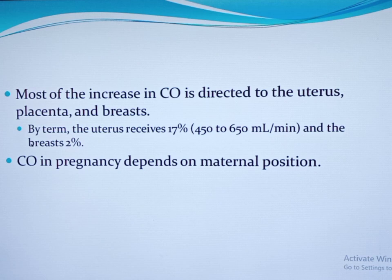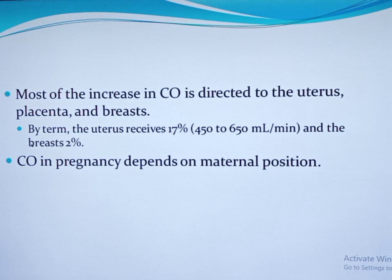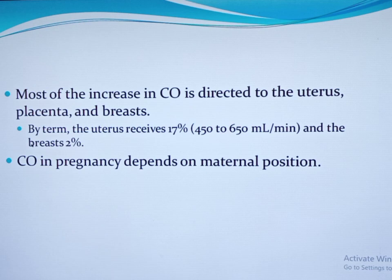In the first trimester and before pregnancy, the uterus receives two to three percent of overall cardiac output and the breast receives one percent. But at term, the uterus receives 17 percent of the cardiac output — that is 450 to 650 ml per minute — and the breast receives two percent. This increment of cardiac output during pregnancy is at the expense of decreased cardiac output fraction to the splenic bed and skeletal muscles. Otherwise, cardiac output to other organs is not significantly affected during pregnancy.